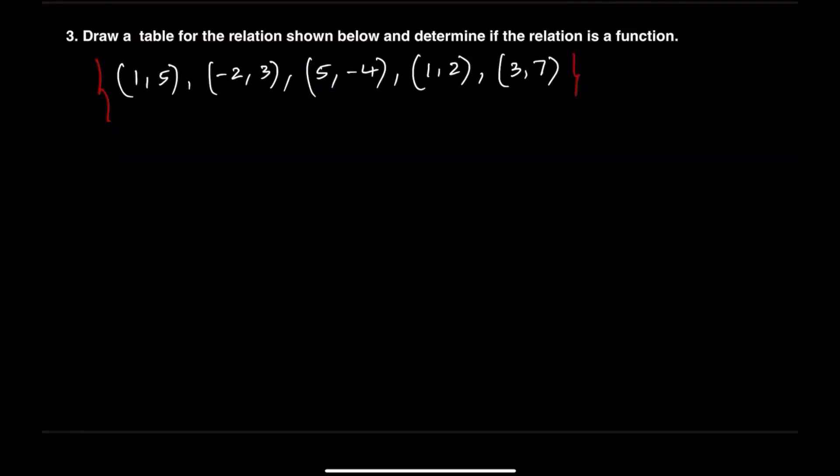Now let's examine another relation by creating a function table. We'll list the input values and match them with their outputs. These represent the domain and range. The input values are negative 2, 1, 1 again, 3, and 5.